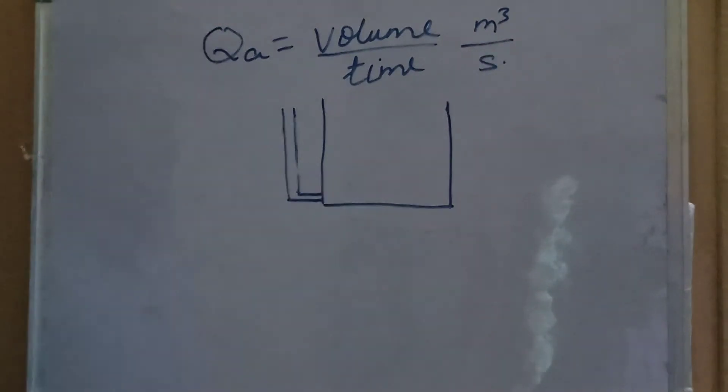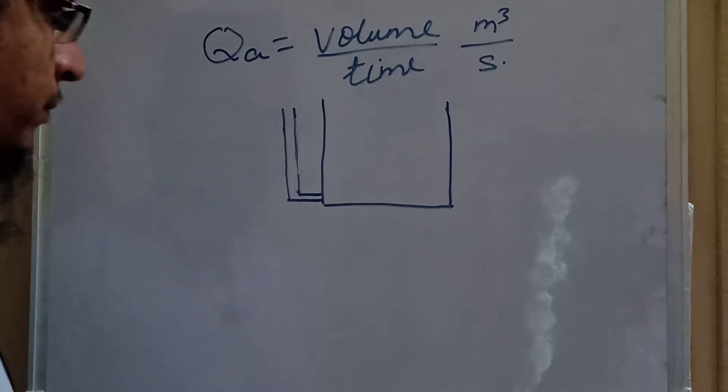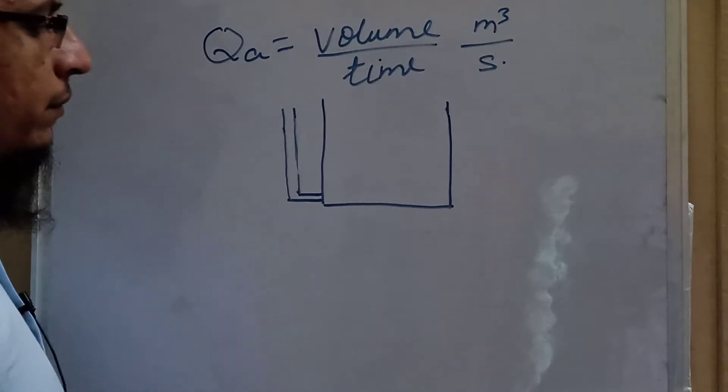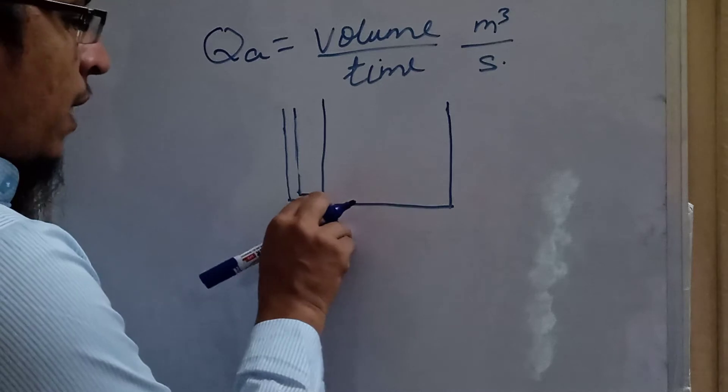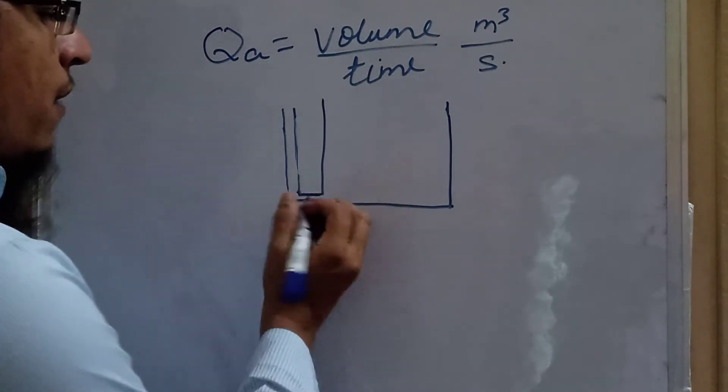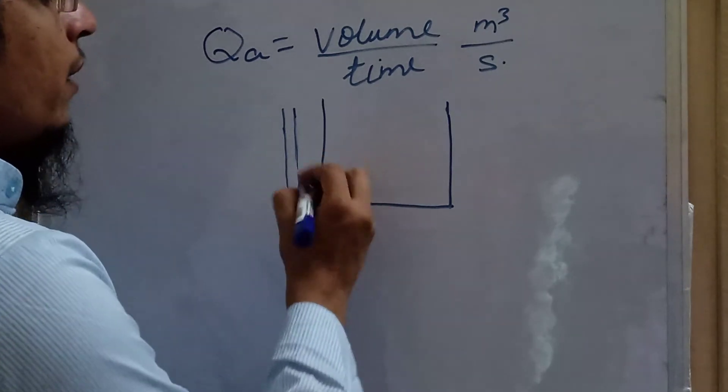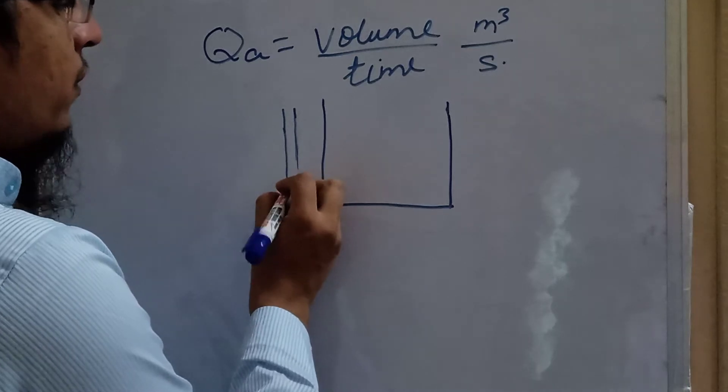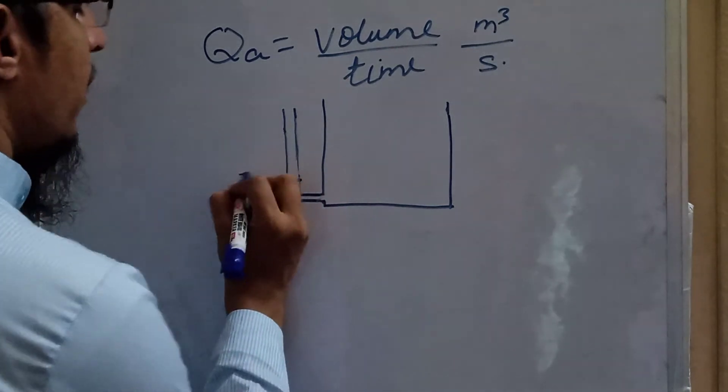For this, we can start when we divert the water towards the collecting tank. Suppose initial height is initial reading, or initial height is this one, and after say 20 seconds or 10 seconds we have this final reading.